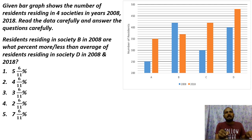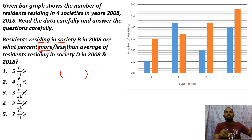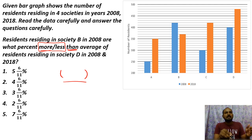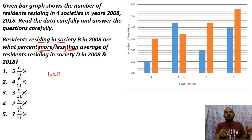Second question: residents residing in Society B in 2008 are what percent more or less? We are comparing two values — their difference — and we need to find that percentage. The question asks: residents in Society B in 2008 (blue colour, 420) compared to what? More or less than the average of residents in Society D in 2008 and 2018.